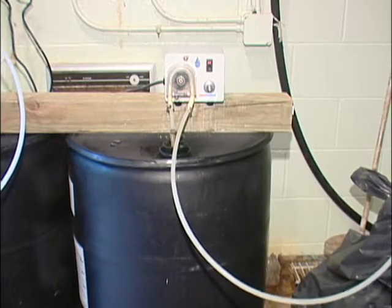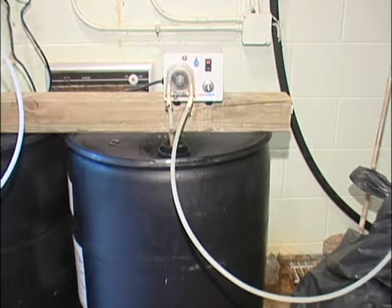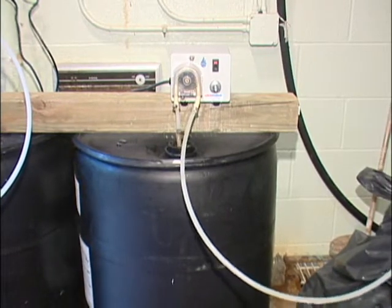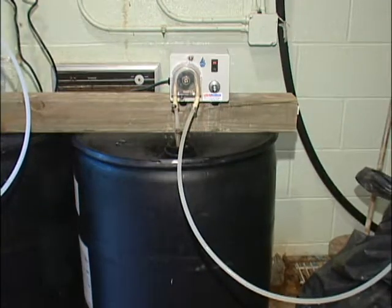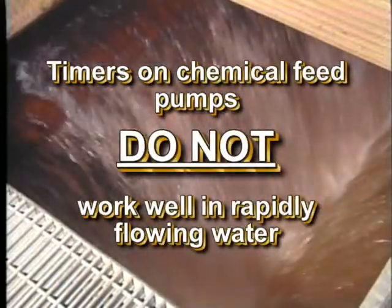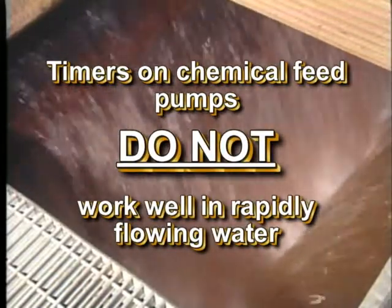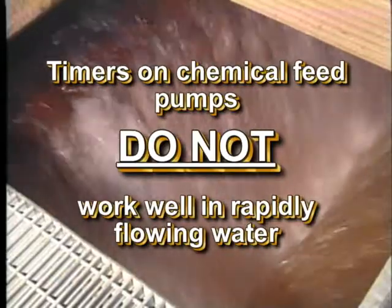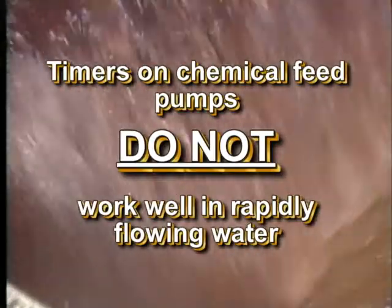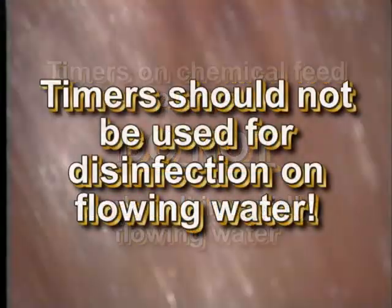Some pumps can be adjusted by setting an on-off timer for intermittent feeds. The pump will come on and feed for a preset time, then be off for a designated period of time. This application is suitable for situations where the chemical is not applied to rapidly flowing water.